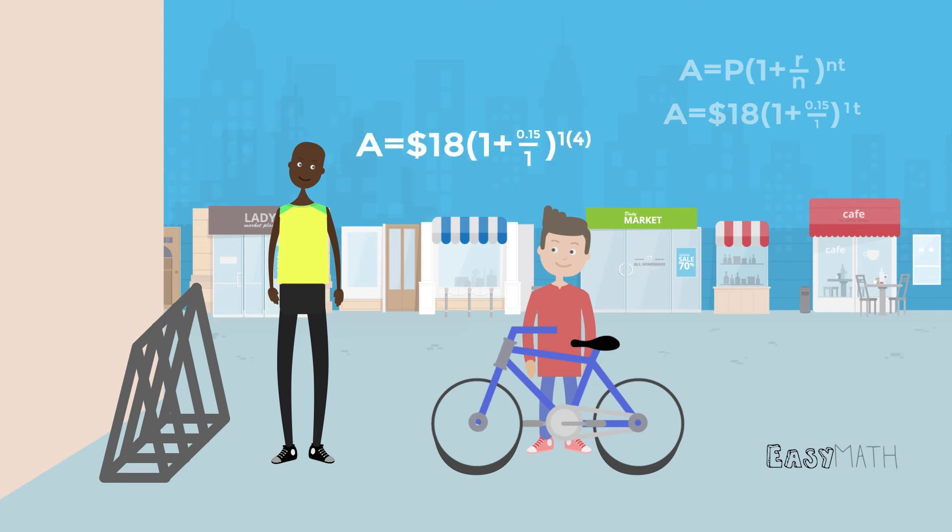Now Jusane knows the T for his equation, and can find out how much Harry owes him. After plugging the variables in the equation, he punches it all into his calculator to find Harry owes him $31.48. Hopefully, that is enough to buy some new tire tubes.